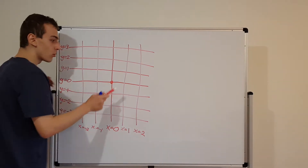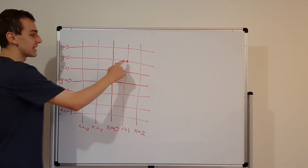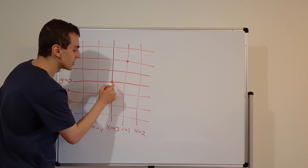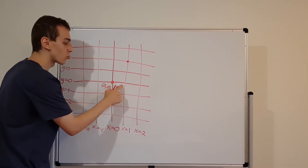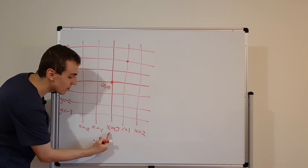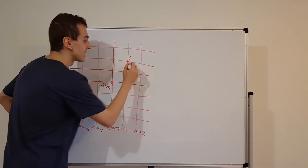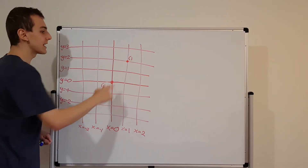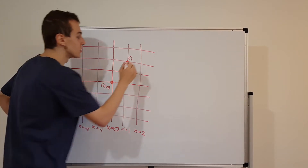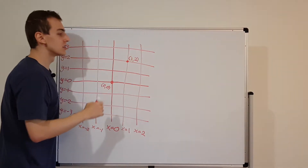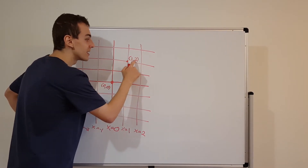Each point on this plane can be described by two numbers that tell you exactly where it is. Starting from the origin, if we move one unit to the right in the positive horizontal direction, that takes us from x equals 0 to x equals 1 — so that's our first number, plus 1. Then we find our vertical coordinate by going up to the y equals 2 line. So this is the point (1, 2): the first number is the horizontal distance and the second is the vertical distance.